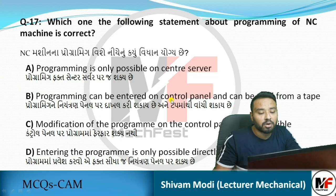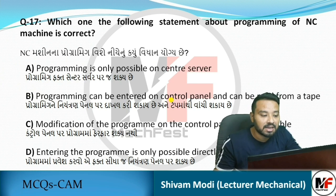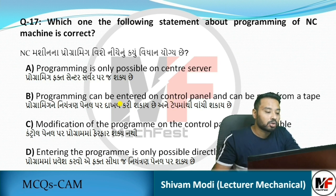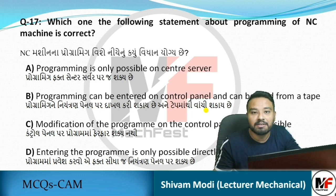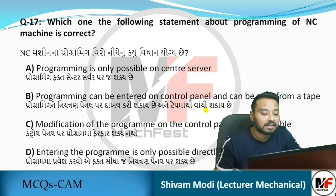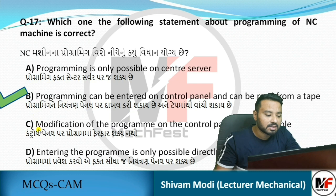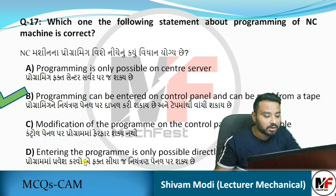Next MCQ: Which of the following statements about programming of an NC machine is correct? Option: programming is only possible on a central server – that is not correct. Programming can be entered directly via the control panel and also via tape. For NC machines, the suitable answer is B – the program can be entered through the control panel as well as through tape, and that is the correct statement suitable for NC machines.